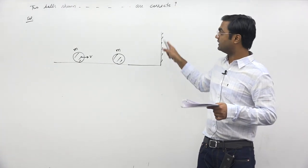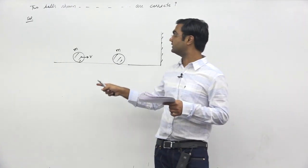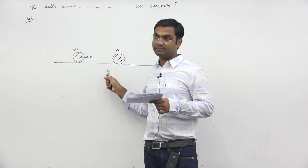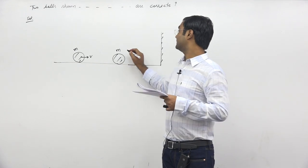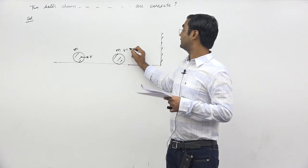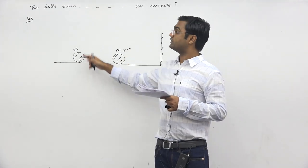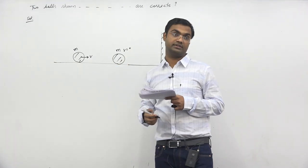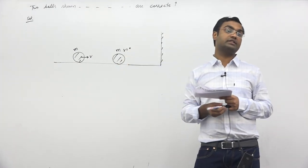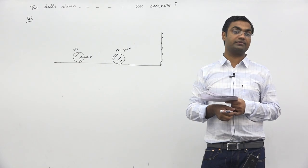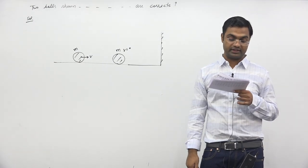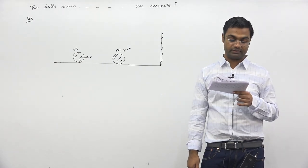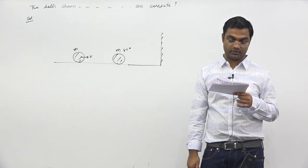In question: this is a wall, this is a ground. There is a mass m and the rest is a mass m, and its speed is v. Whatever the collision is perfectly elastic — what will happen?